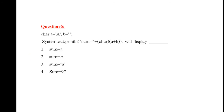Question 6: char a = 'A', b = ' ' (space). You print (char)(a + b). 'A' is 65 and space is 32, so 65 + 32 = 97. The character for ASCII value 97 is lowercase 'a'. So the right answer is: sum = a.